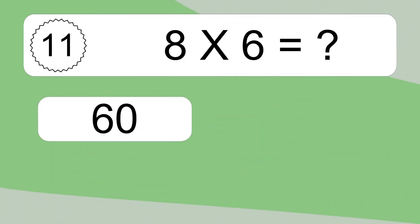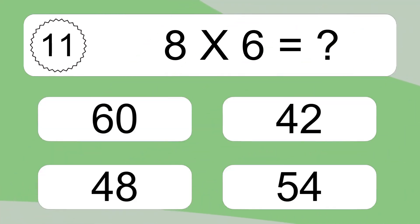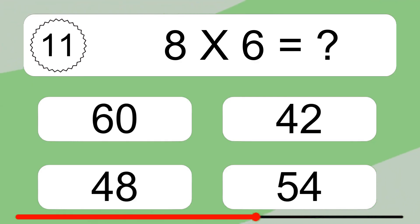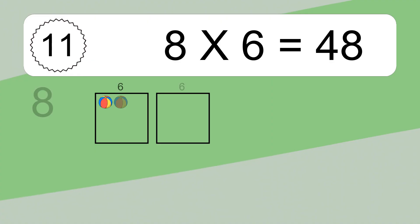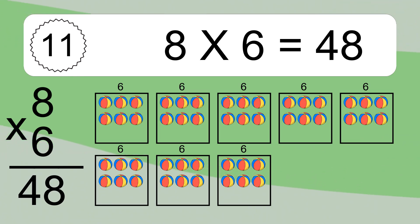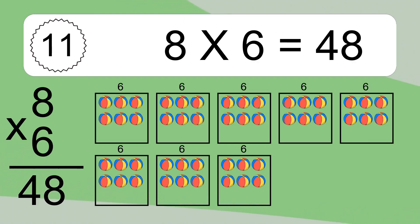8 times 6 equals what? 8 times 6 equals 48. We have 8 boxes, and each box has 6 colorful balls inside. If you count all the balls in all the boxes together, you will have 8 times 6 balls. This equals 48 balls.